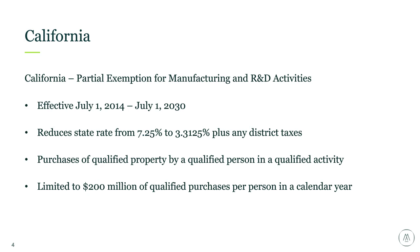It's important to distinguish between the agricultural exemption and the manufacturing R&D exemption because they apply to different activities and have different sales tax rates. There can be different documentation that applies, so you'll want to track the use of those exemptions separately. California has had the manufacturing R&D exemption since July 1st, 2014, and the partial exemption for electrical power generation since January 1st, 2018. The exemption applies to machinery and equipment, tools, and special purpose buildings.